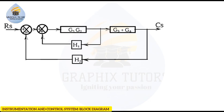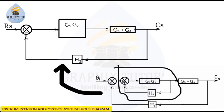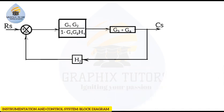Now, applying this to our diagram: the positive feedback portion gives us g1g2 divided by one minus g1g2·h1, because we have positive feedback. I reduce this and write it accordingly. Everything remains the same; I have converted the positive feedback mechanism into a single block which combines with its summing point. We now have the input rx with one summing point, three blocks remaining, and one negative feedback. You can also see that g1g2/(1 − g1g2·h1) is in series with (g3 + g4).